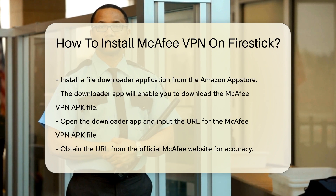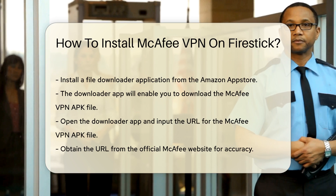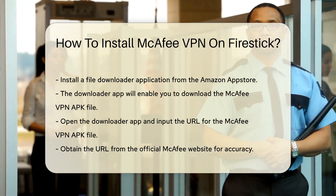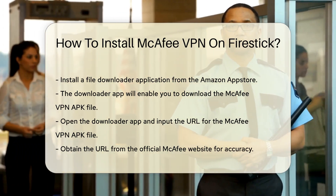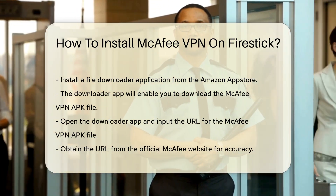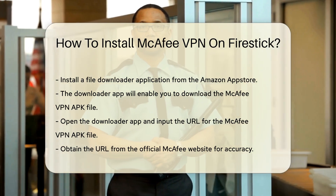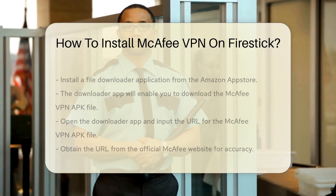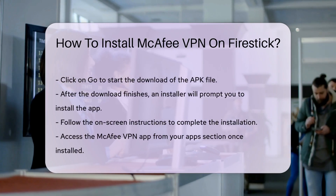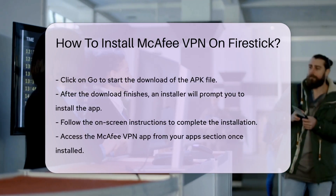Once the downloader app is installed, open it and enter the URL for the McAfee VPN APK file. This URL can usually be found on the official McAfee website. After entering the URL, click on Go to begin downloading the APK file.